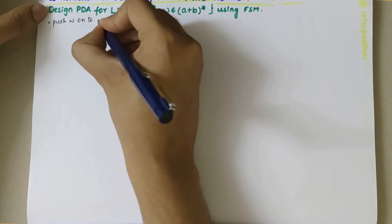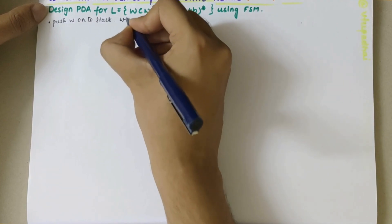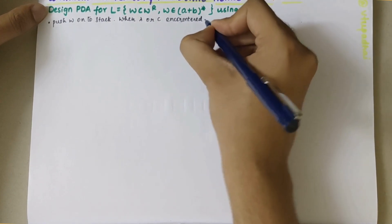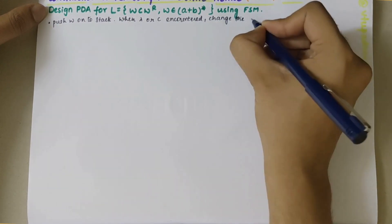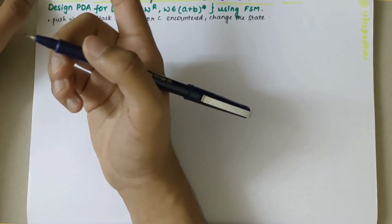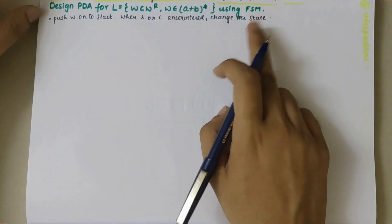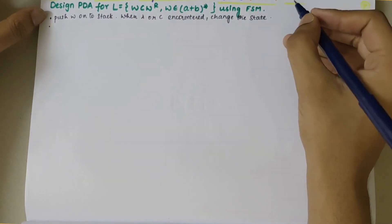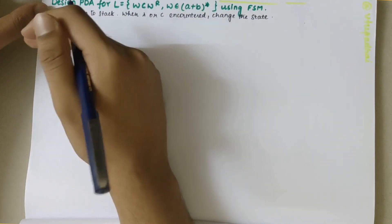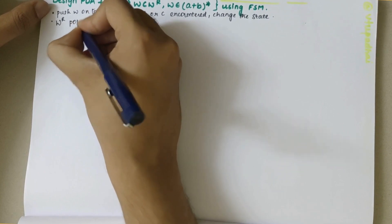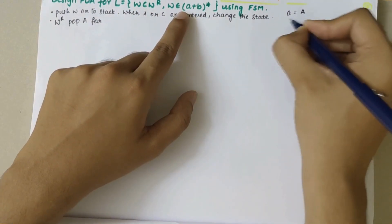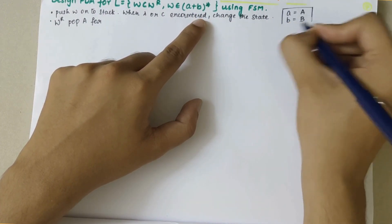Whenever lambda or C is encountered, we need to change the state. On top of the stack, if there's A or B, we keep it as it is. For W, we keep on pushing elements onto the stack. When we reach W^R, we need to start popping elements. In case of small 'a' we push capital A, and for small 'b' we push capital B into the stack.